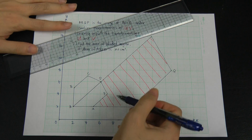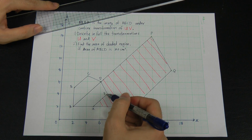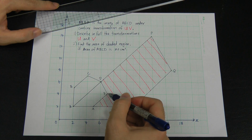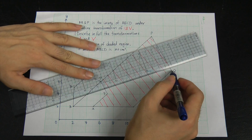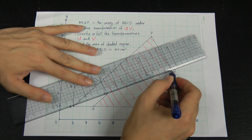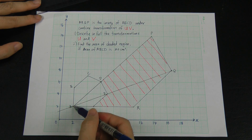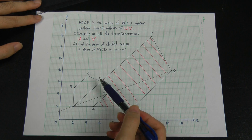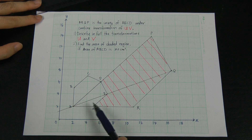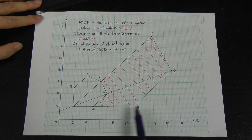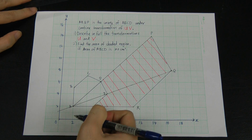Connecting coordinate Q to coordinate Y, they will touch coordinate A. Joining P to D also touches A. Joining R to X also touches A. So I know the center point is A.